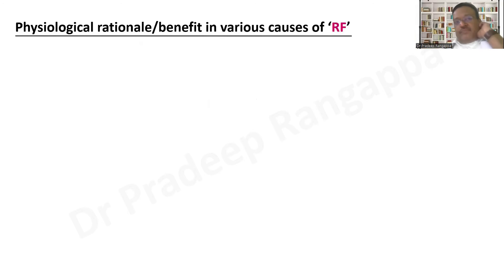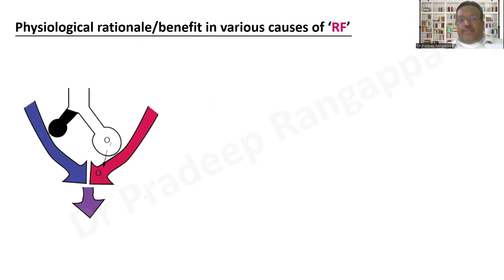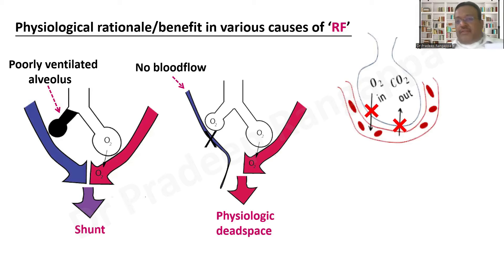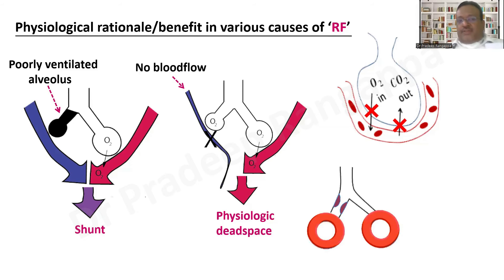Looking at physiological rationale across the causes of respiratory failure: the shunt — pneumonia, aspiration — is the predominant cause in the ICU, and NIV recruits collapsed alveoli that HFNO cannot. Dead space problems — pulmonary embolism, COPD — also see a better role for NIV. Diffusion impairment from interstitial lung disease and V/Q mismatch are further conditions where NIV has a superior role.